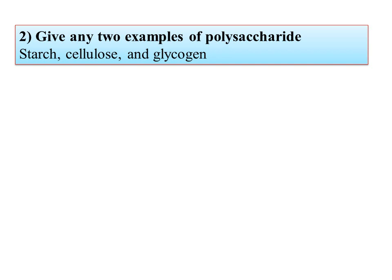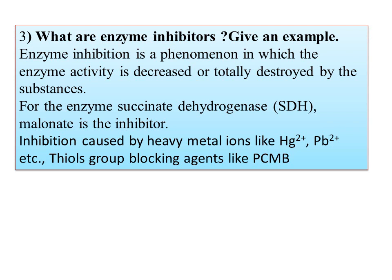Next question: give any two examples of polysaccharides. Polysaccharides include starch and cellulose, which are of plant origin. Glycogen is found in animals. These are stored in foods and are also relevant to protein studies.